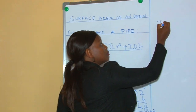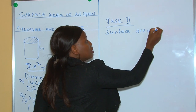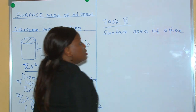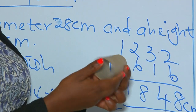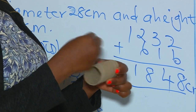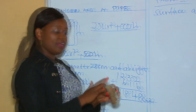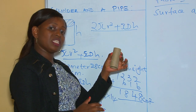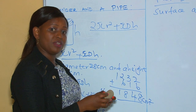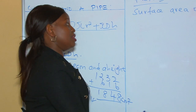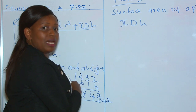Now for task two: the surface area of a pipe. A pipe looks like this — it should not be closed anywhere and should not have a circle anywhere. The surface area of a pipe is basically only the curved surface. This is where the label is put; sometimes questions ask you to find the surface area of the label used to market a product on a cylindrical container.